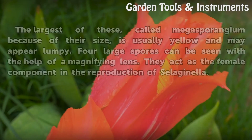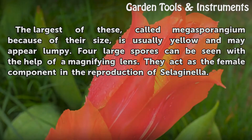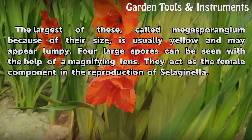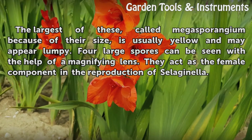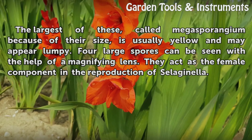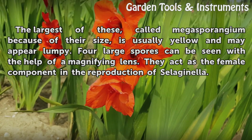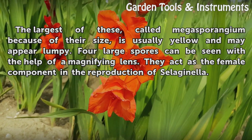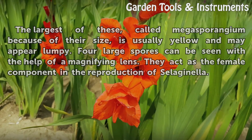Megasporangium. The largest of these, called megasporangium because of their size, is usually yellow and may appear lumpy. Four large spores can be seen with the help of a magnifying lens. They act as the female component in the reproduction of Selaginella.